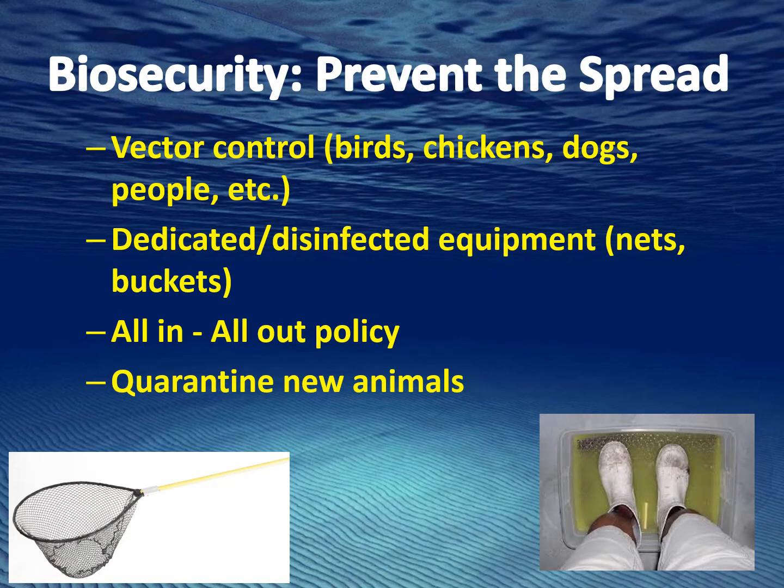The second principle of biosecurity is preventing the spread. If a pathogen does enter your facility, you need to reduce the spread as much as possible. As with the first principle, control domestic and wild animals as well as people away from the contaminated system. Each system should have dedicated equipment, including nets, airlines, and air stones.